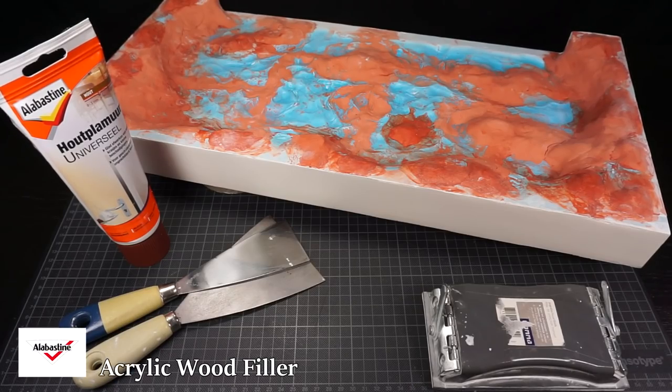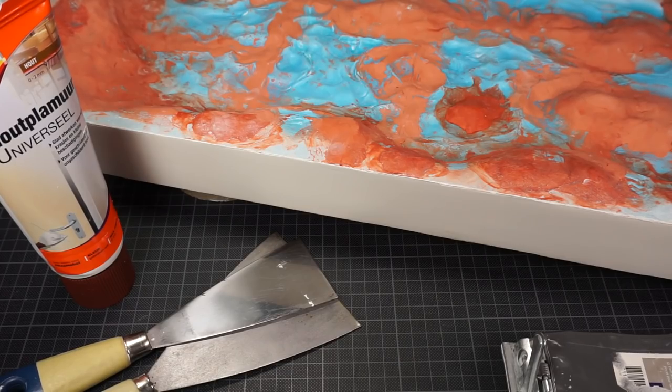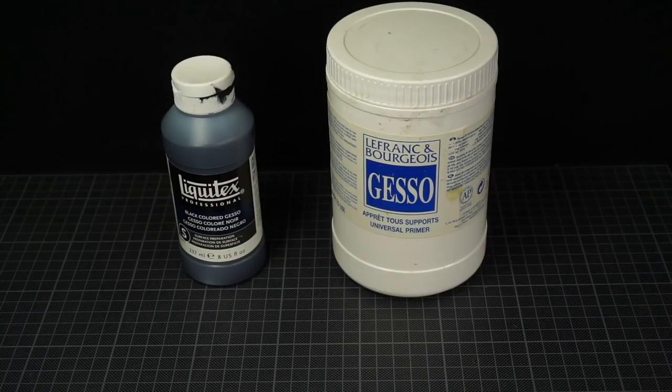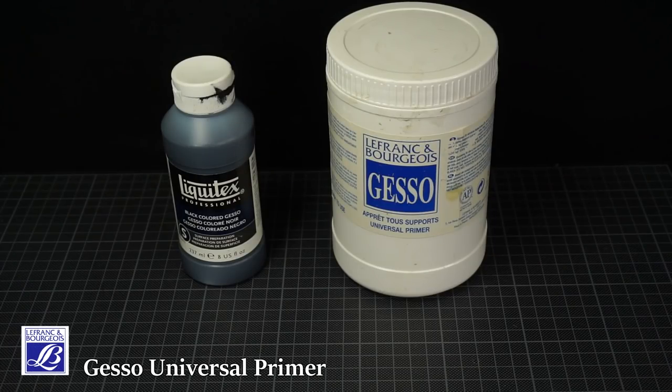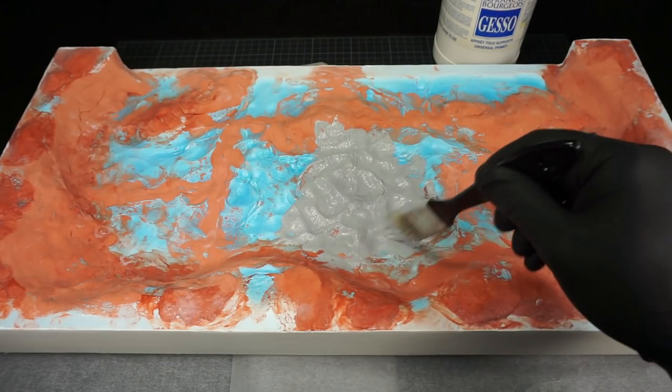The sides of the board were then given a layer of wood filler and sanded afterwards. I'm then adding the first layers of primer onto the board. I'll be using these gesso primers to do this.